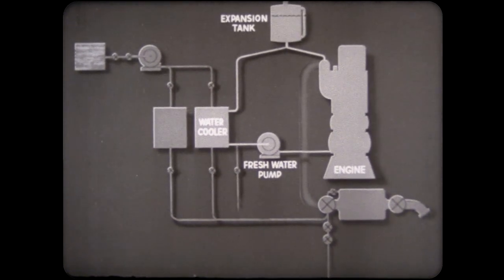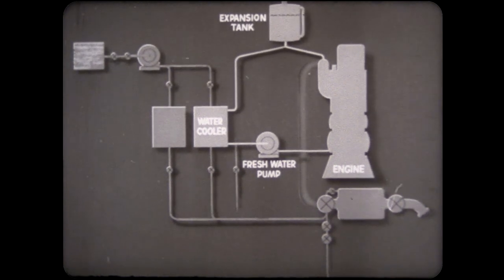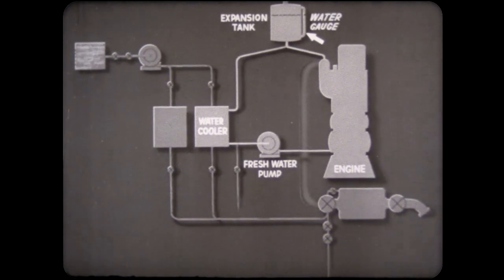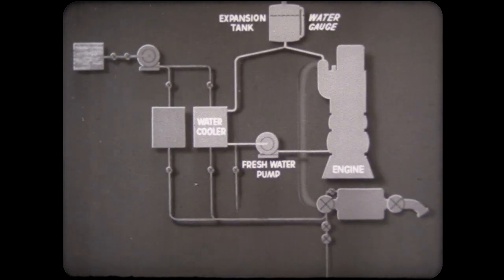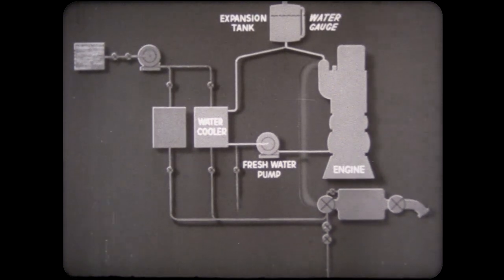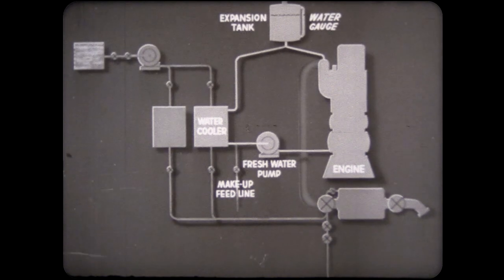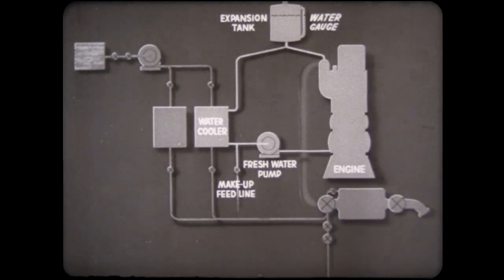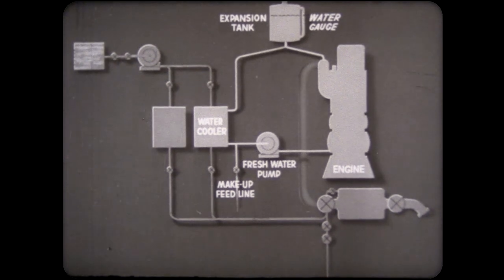An expansion tank is located at the highest point on this line. A sight gauge mounted on the tank indicates the amount of water in the system. The make-up feed line for adding fresh water is located at the suction side of the pump. Pressure gauges and thermometers are placed at various points in the system.